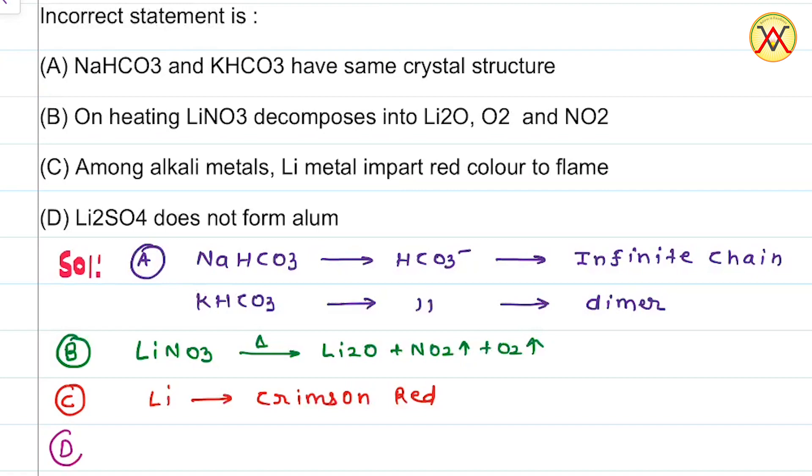Option D: Li2SO4 does not form alum due to the small size of lithium. So option D is correct.